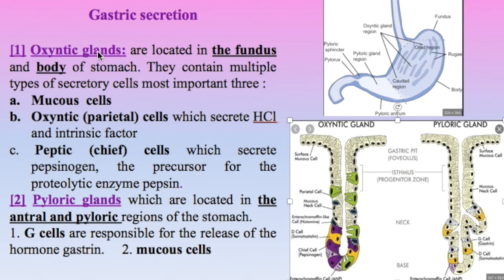The oxyntic gland contains multiple secretory cells: the mucus cell which secretes mucus; the parietal cell or oxyntic cell which secretes the very important gastric acid HCl and the intrinsic factor, which is responsible for the absorption of vitamin B12. We also have the chief cell which secretes pepsinogen, the precursor for the proteolytic enzyme pepsin, which is important for the digestion of protein. In addition, we have the D cell which secretes a small amount of somatostatin, and the enterochromaffin-like cell which secretes histamine.